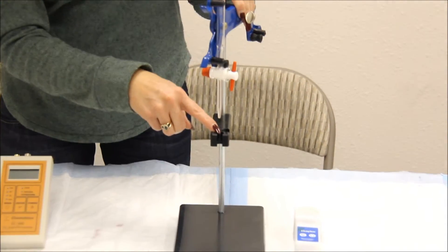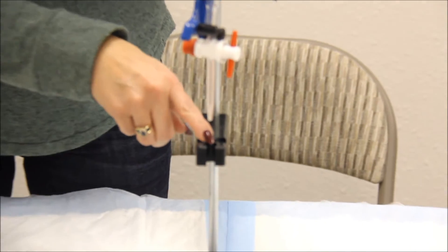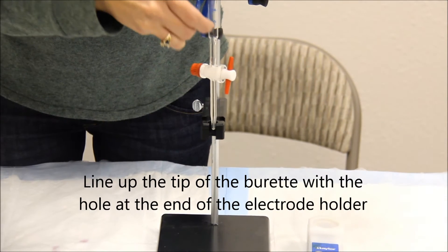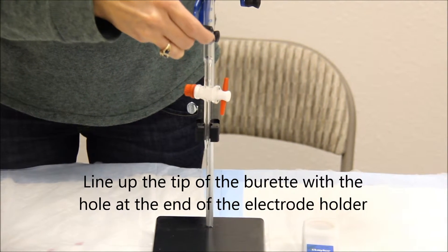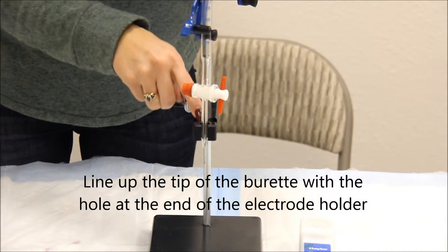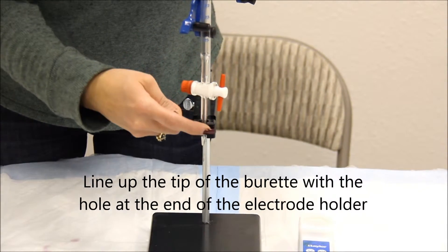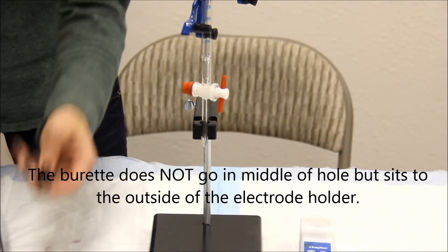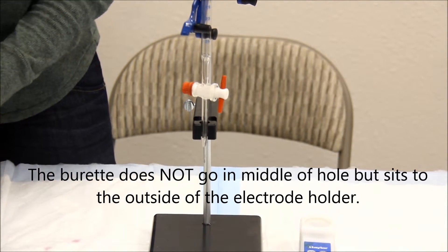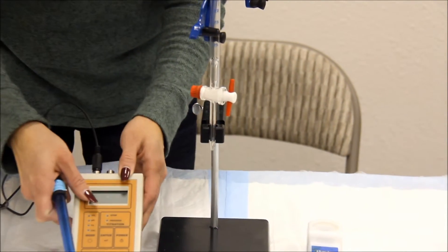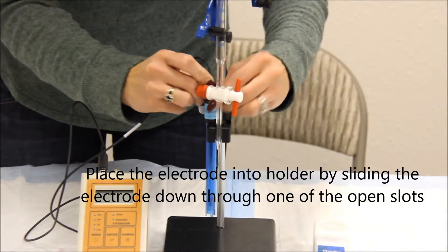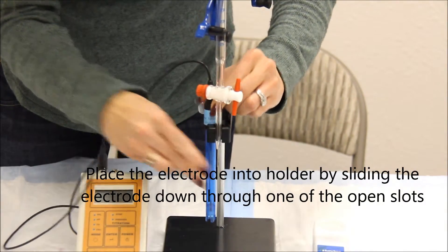Use the front hole of your electrode holder as a guide to where your burette will go. The burette does not fit into the hole but sits outside the electrode holder and just acts as a guide. You can place your electrode by sliding it down into one of the holders.